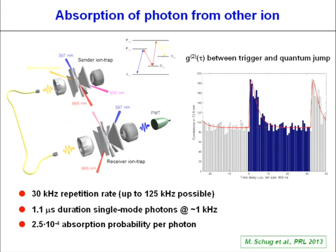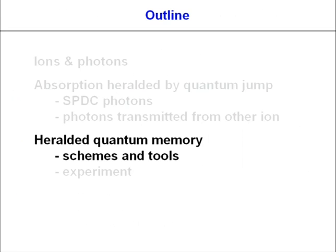This is essentially a primitive version of connecting two ions over a macroscopic distance, where we take out one photon from one ion and absorb it into the other ion. However, because we detect with a quantum jump, the state of the photon is not in any way preserved in the atom after absorption. This is what we address in the final experiment: the heralded quantum memory.